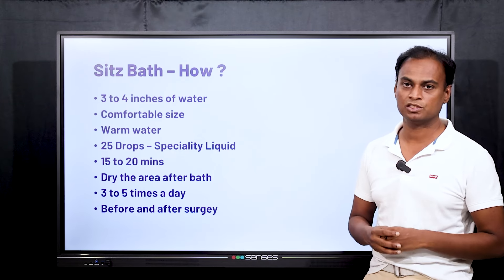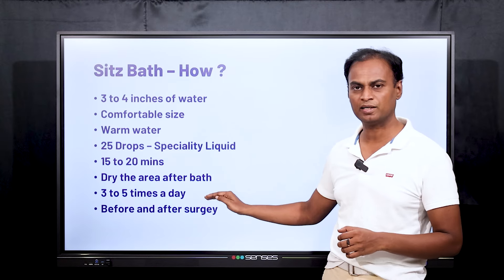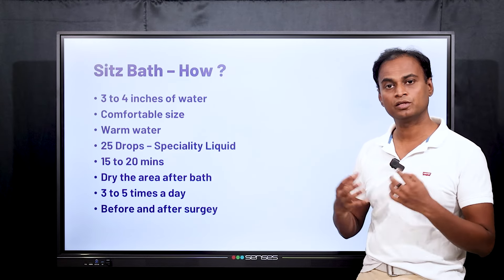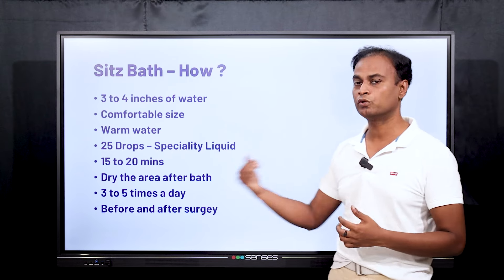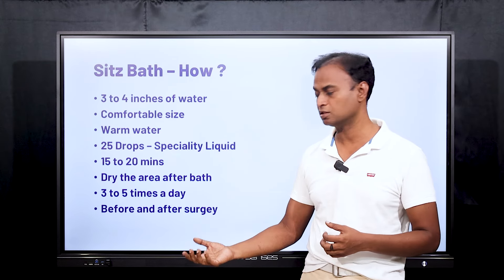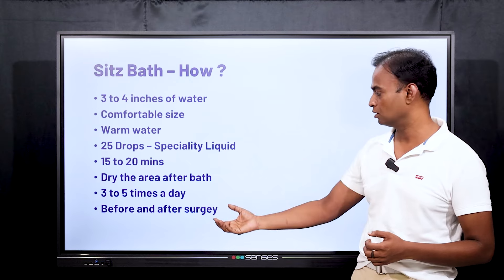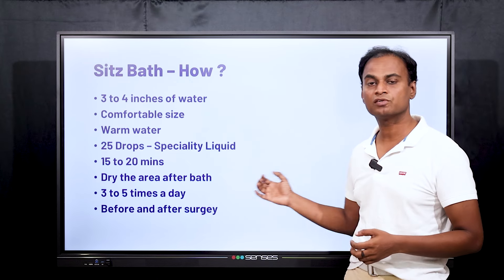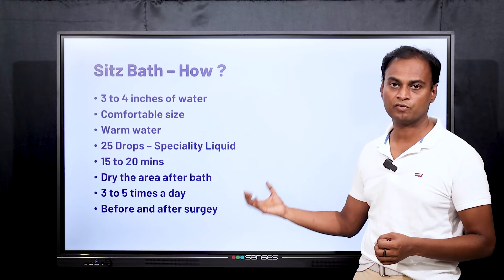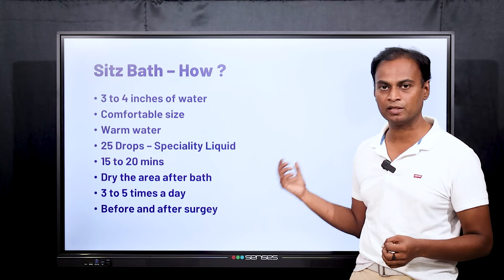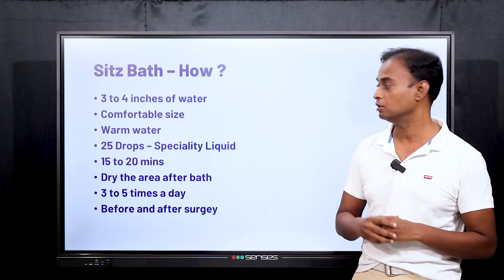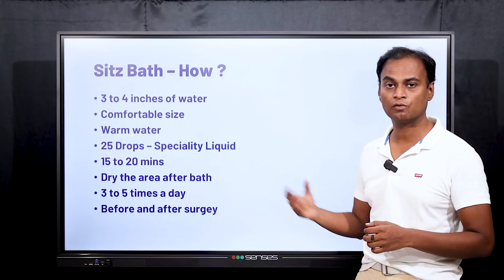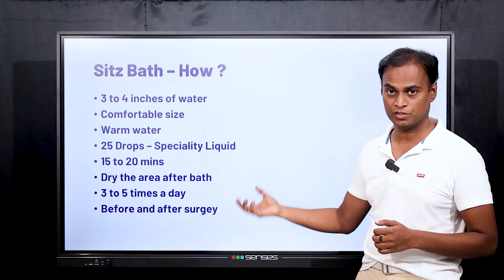How many times do you have to do the sitz bath? At least three to five times per day. When can you do the sitz bath? You can do it when you are under homeopathic treatment, or before going to surgery, or if you are taking allopathic treatment. Even after the surgery you can do the sitz bath — there will be a lot of advantages and healing will return you to your daily routine very quickly. Such is the importance of the sitz bath.